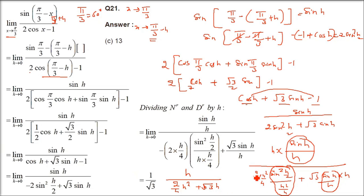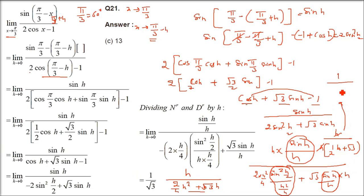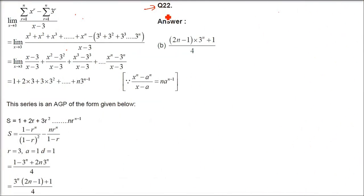Remember the first term is negative as we found. Now take h common from numerator and denominator, cancel it: we get 1 divided by (negative h/2 plus √3). Now limit h tends to 0: h goes to 0, so we get 1 by √3. Remember I missed that negative sign — you have to add the negative sign. So the answer is 1 by √3.